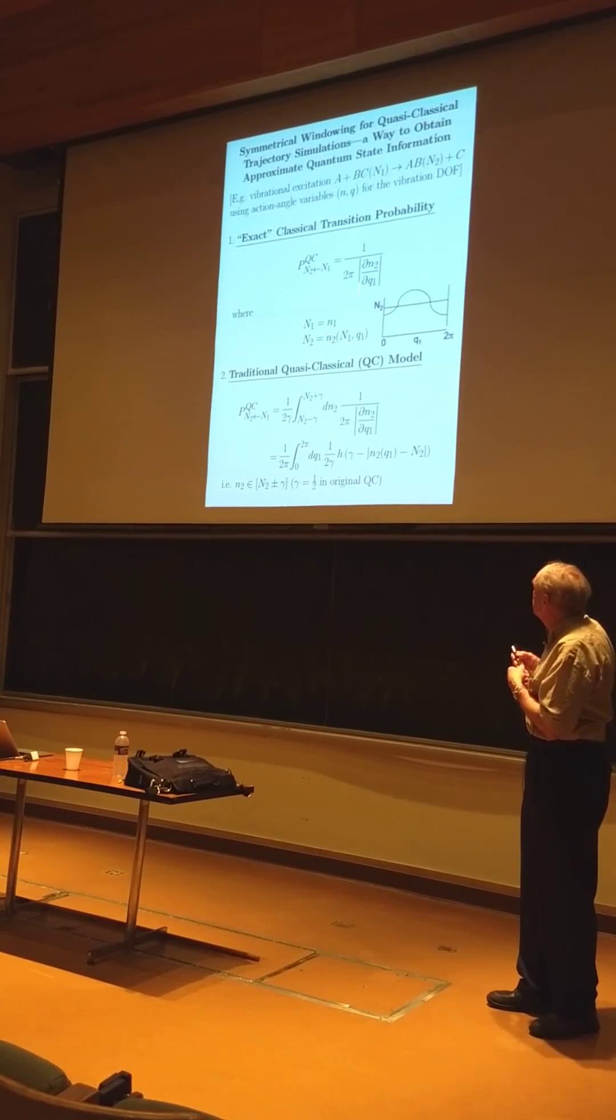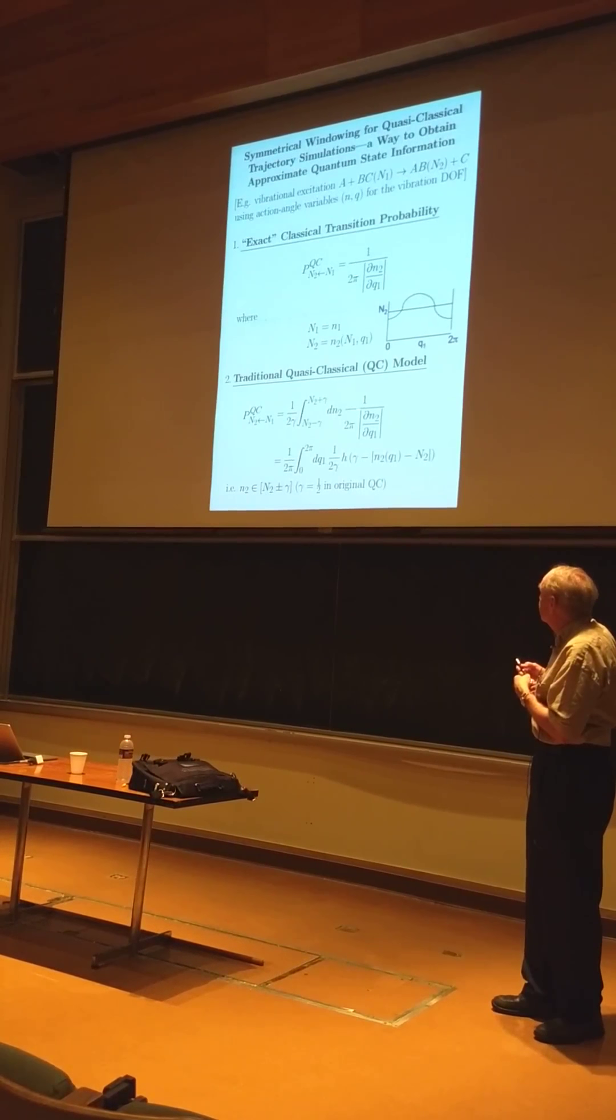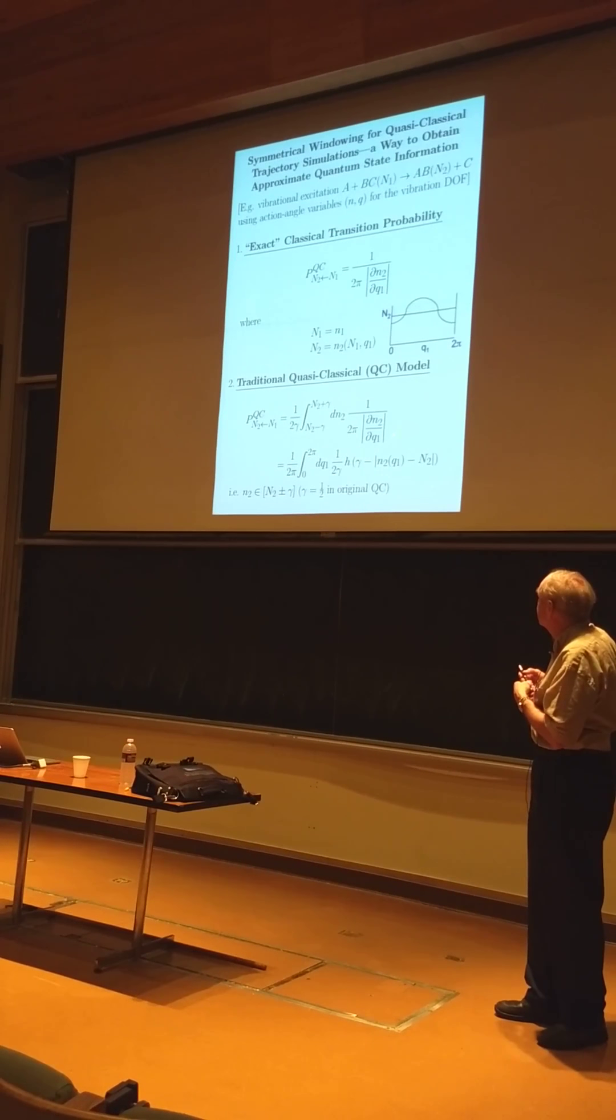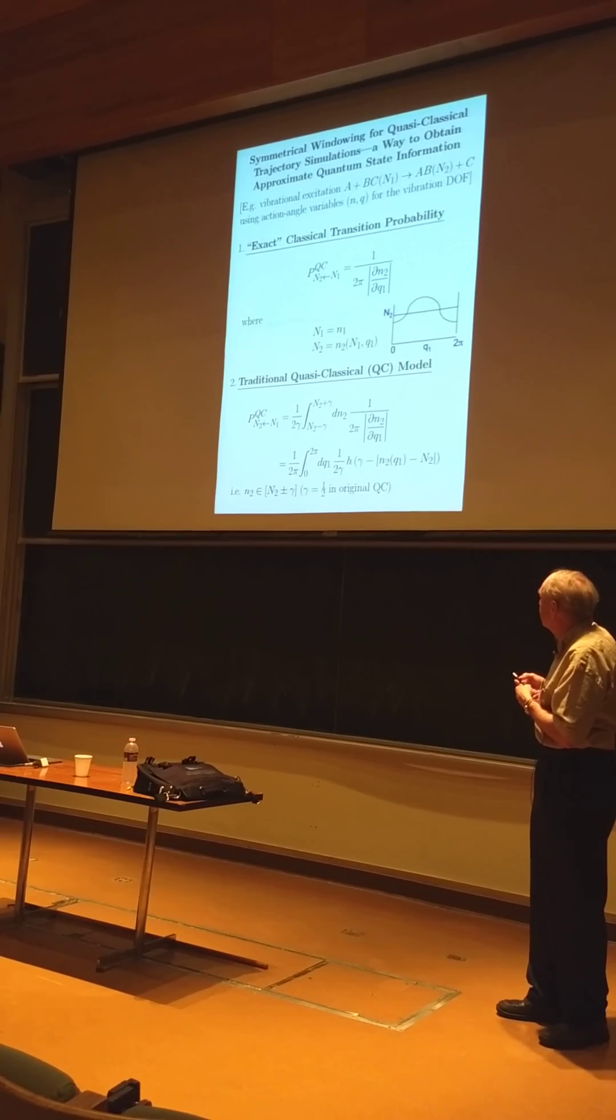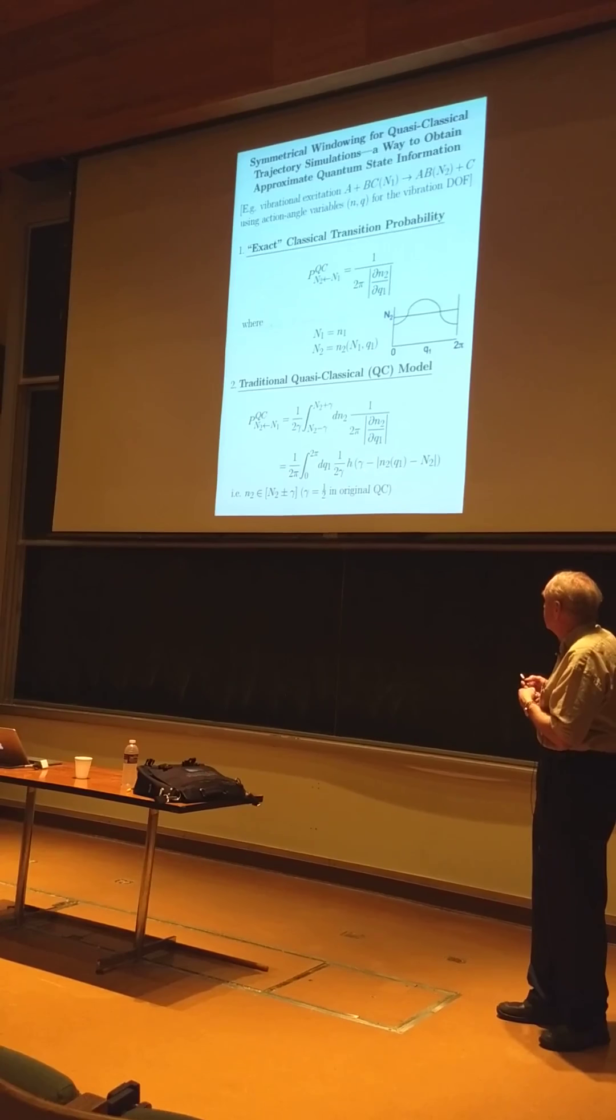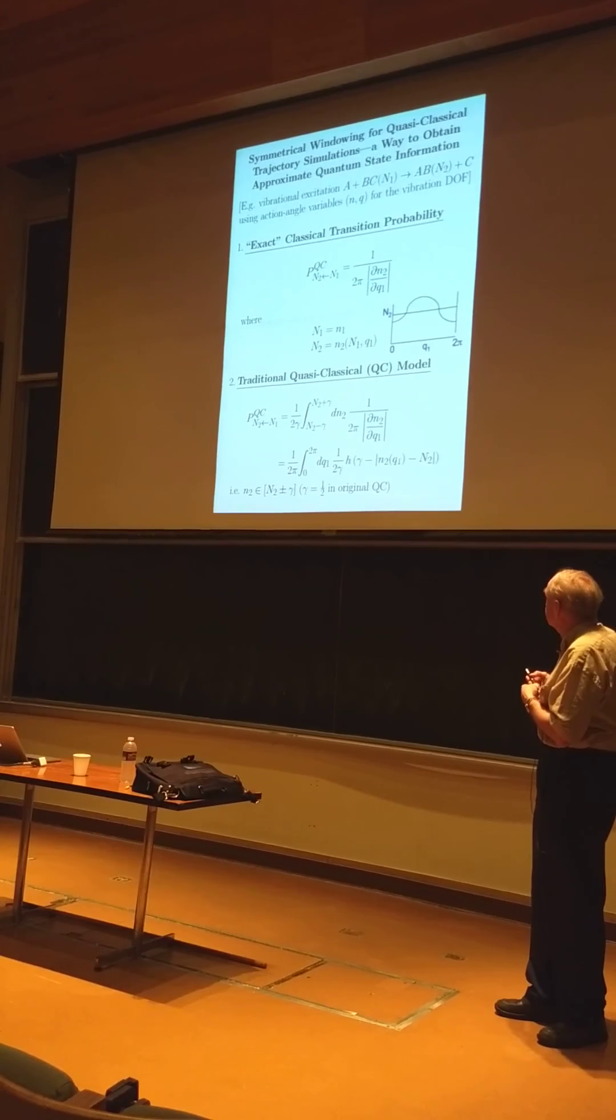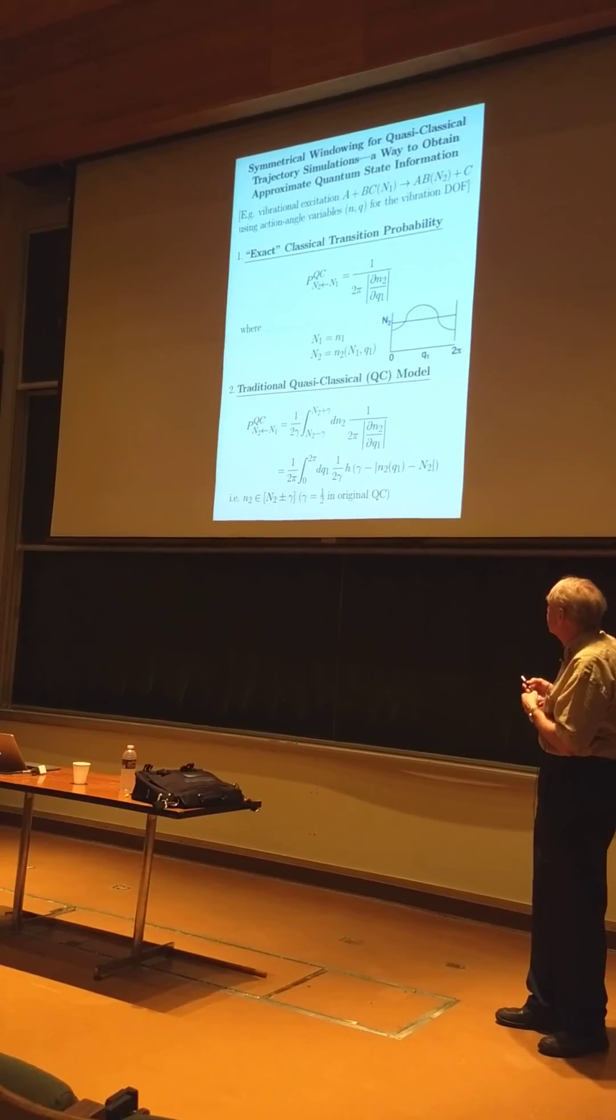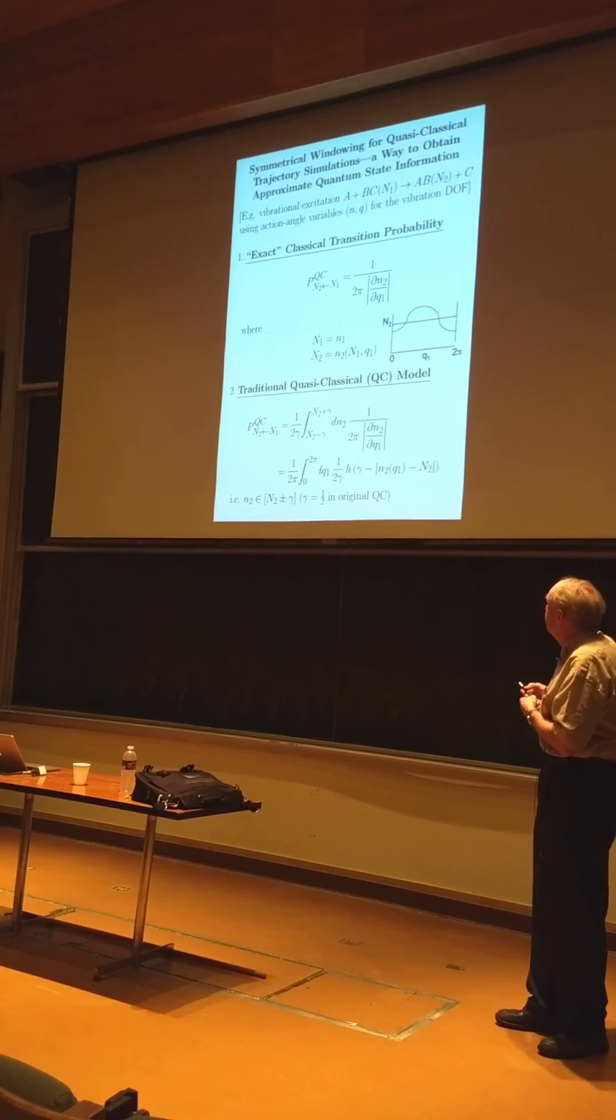So you actually do better classically. You smear things out a little bit. You take this quantity and average it over the final action from the integer plus minus a little window, say gamma. Now, if you integrate over this quantity, you see, that's exactly the Jacobian.